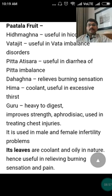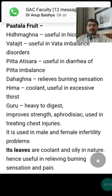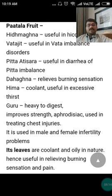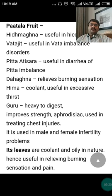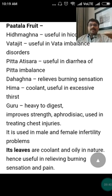The fruit is Hidmaghna — useful in hiccups; useful in Vata imbalance; Pitta Atisara — useful in diarrhea due to Pitta imbalance; Dahaghna — relieves burning sensation; Hima — it is a coolant, useful in excessive thirst; Guru — heavy to digest; improves strength; aphrodisiac; used in treating chest injuries and male as well as female infertility problems. The leaves are coolant and oily in nature, hence useful in relieving burning sensation and pain in the body.